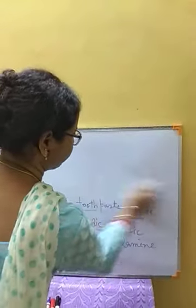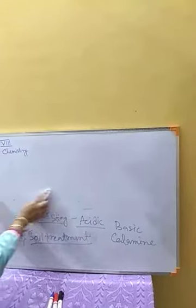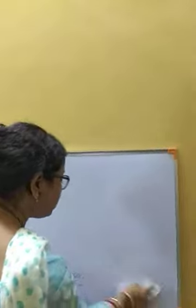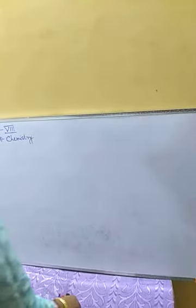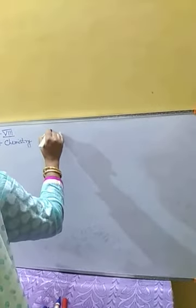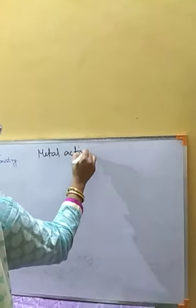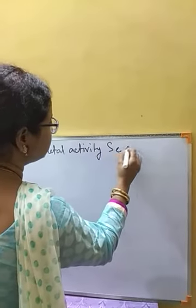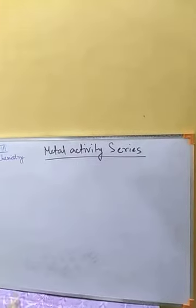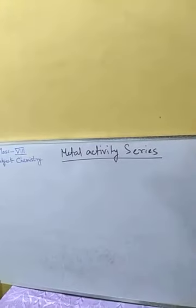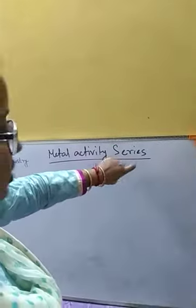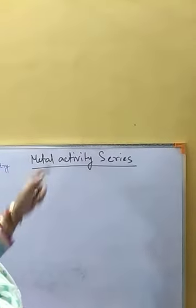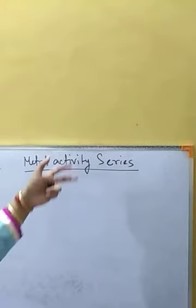Next, we will be discussing the metal activity series. In our next class we will go for a detailed discussion. Now the metal activity series is a series or list of metals listed in such a manner that the most active metal is kept at the top and accordingly its activity decreases going down.